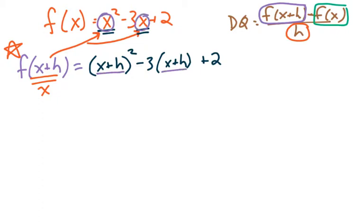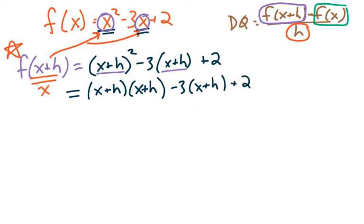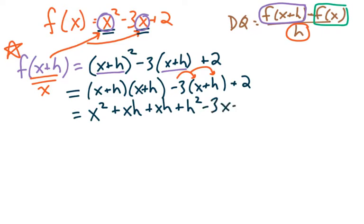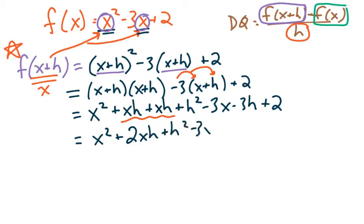Now let's do the algebra. x plus h squared — we have to FOIL that. That gives x squared plus 2xh plus h squared. Then distributing negative 3 into (x+h) gives minus 3x minus 3h, and then plus 2. Collecting like terms: x squared plus 2xh plus h squared minus 3x minus 3h plus 2. Notice there are two xh terms, so that becomes 2xh.